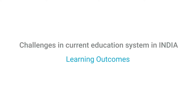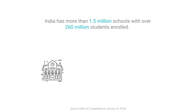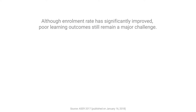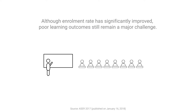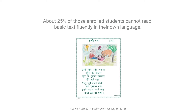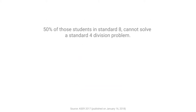Challenges in the current education system in India — Learning Outcomes. India has more than 1.5 million schools with over 260 million students enrolled. Although enrollment rate has significantly improved, poor learning still remains a major challenge. About 25% of enrolled students cannot read basic text fluently in their own language, and 50% of students in Standard 8 cannot solve a Standard 4 division problem.